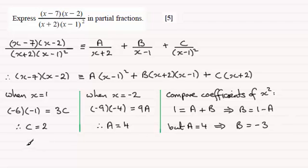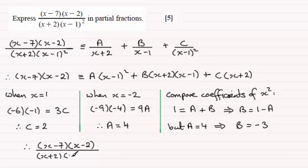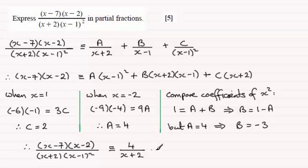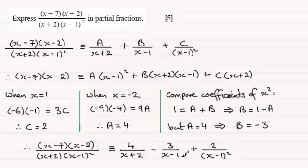So we've got our constants now. To recap, we'll write out our fraction again: (x minus 7)(x minus 2) all divided by (x plus 2)(x minus 1) squared. This is identical to — A is 4, so we've got 4 over (x plus 2). B is minus 3, so we write minus 3 over (x minus 1). And C is positive 2, so plus 2 over (x minus 1) squared. And there you go, expressed in partial fractions.